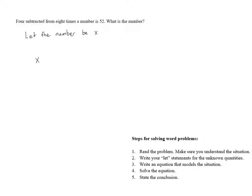But we're looking at 8 times the number in the problem. If the number is x, but we want 8 times that, we need to multiply it by 8, and so that becomes 8x. Lastly, we're told that 4 is being subtracted from that. 4 subtracted from 8 times a number. To subtract 4 from this, it becomes 8x minus 4.